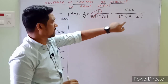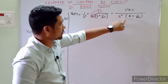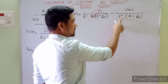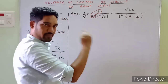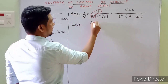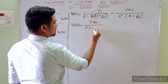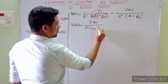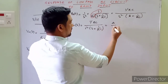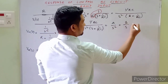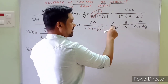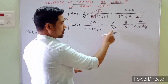The denominator has a repeated pole at s = 0 (s²) and a simple pole at s = −1/(RC). For this type of equation with a repeated pole, the partial fraction expansion is: V₀(s) = A/s² + B/s + C/(s + 1/(RC)).